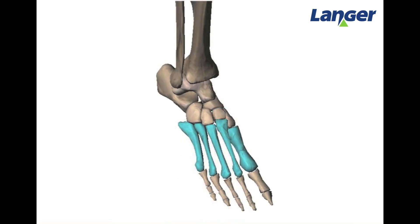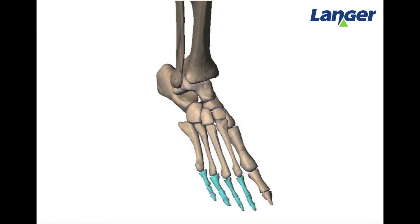The middle part of the foot is made up of five metatarsals. Each metatarsal consists of a base, a shaft, and a head. More distally to the metatarsals are the phalanges.